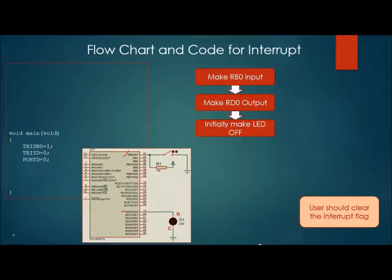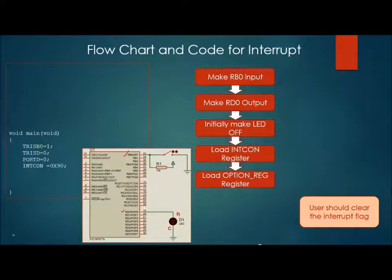In our previous slide we have found INTCON register has to be loaded with 90 hex. Now load the value 90 hex to INTCON register. Also load 0 hex to OPTION_REG register. That's it. After this you have to do nothing so write while true loop with a semicolon. You are ready with your main code.